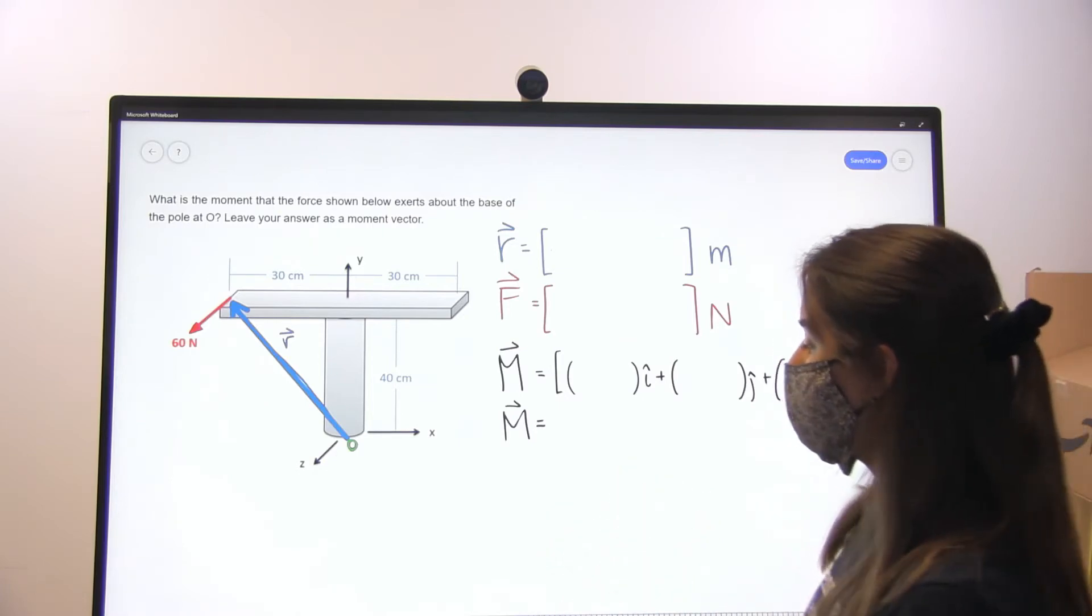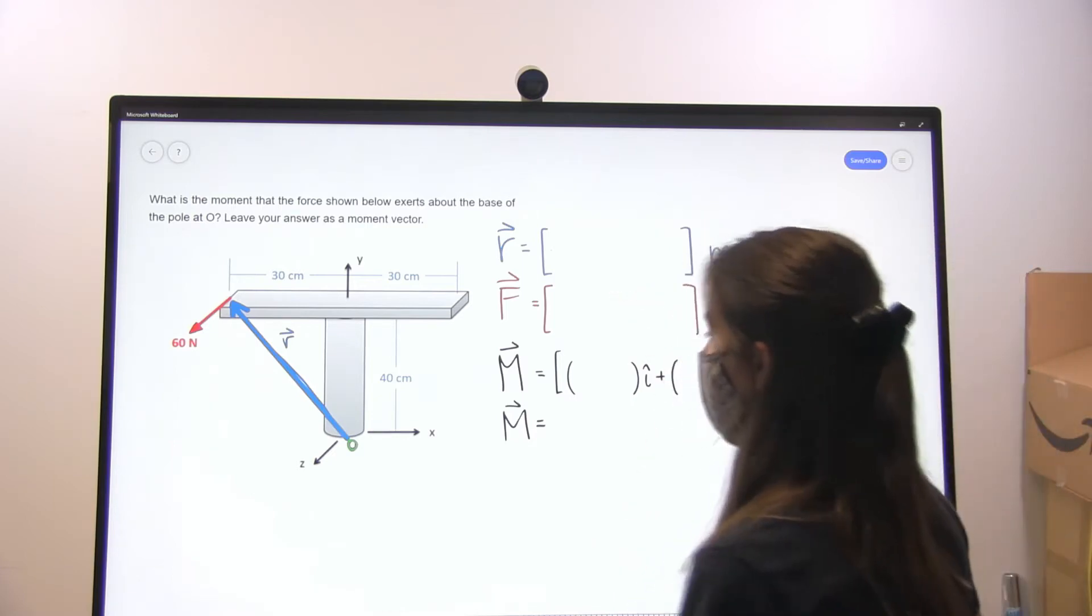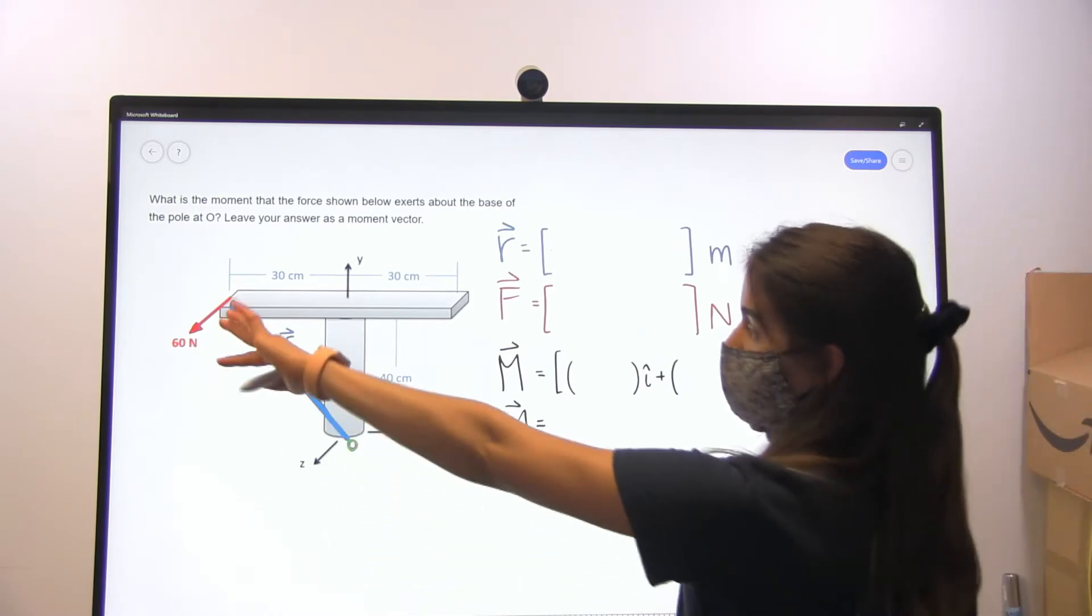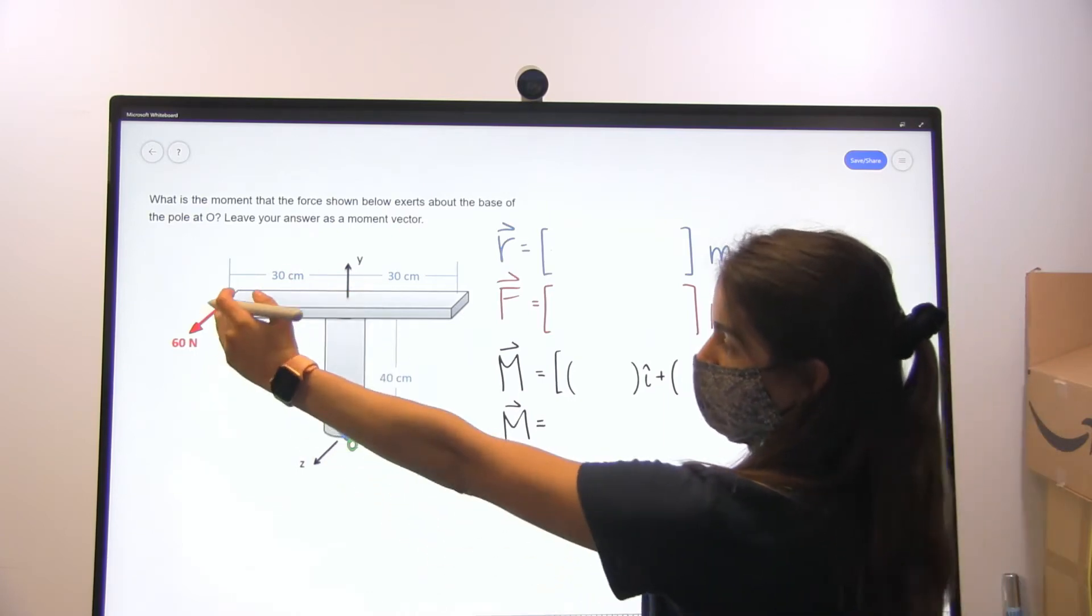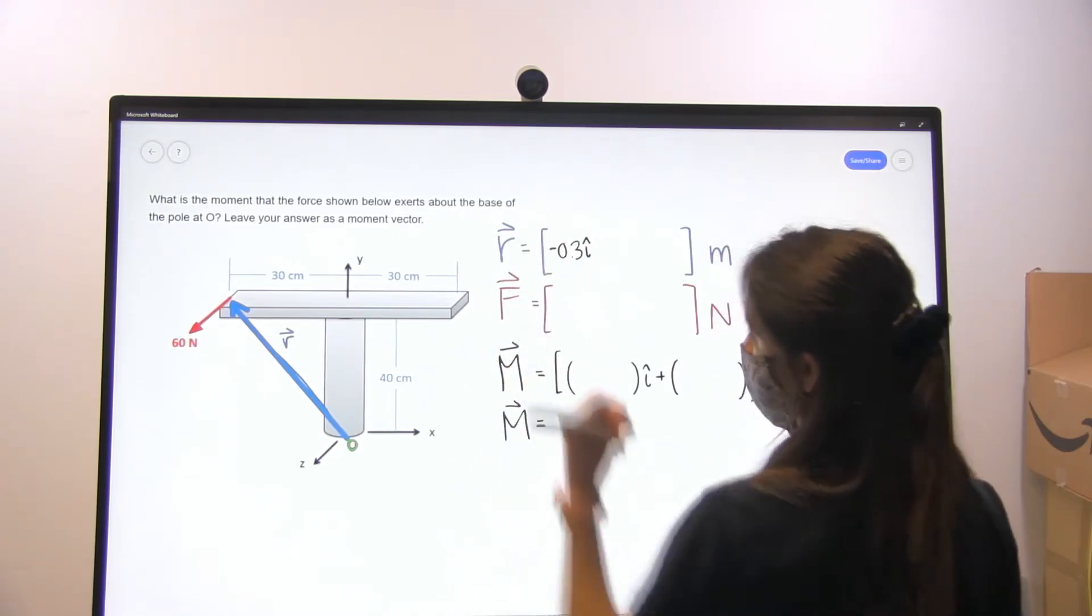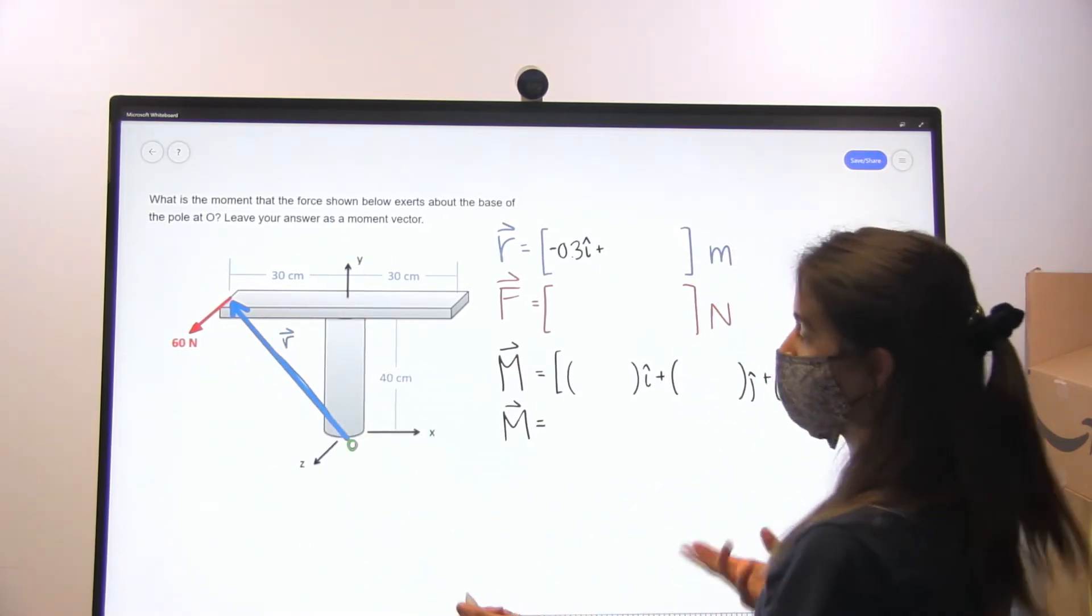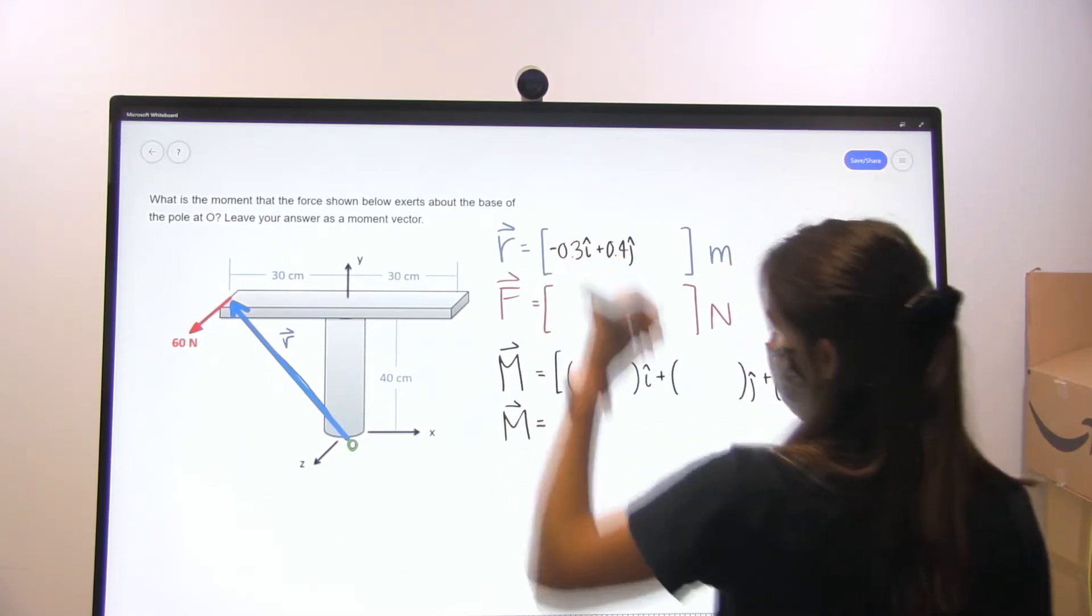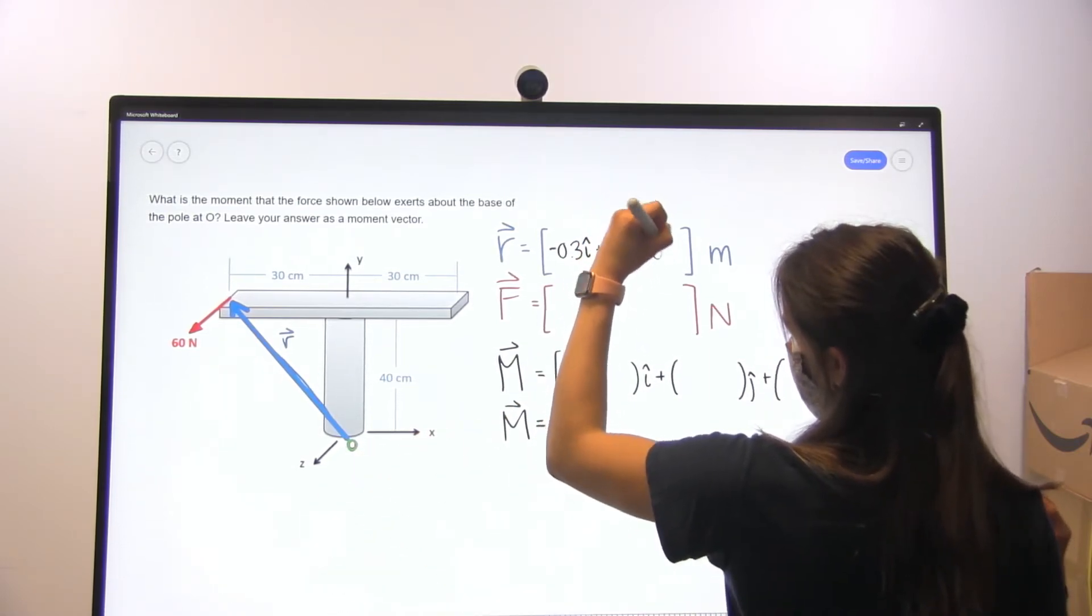So now that we have defined our coordinate system, what we want to do is define our vectors that we're going to be using. Our r vector, which is the distance between our point of interest and our force being applied, is going to be equal to minus 0.3 meters in the i direction, then 0.4 meters in the j direction, and lastly 0k.